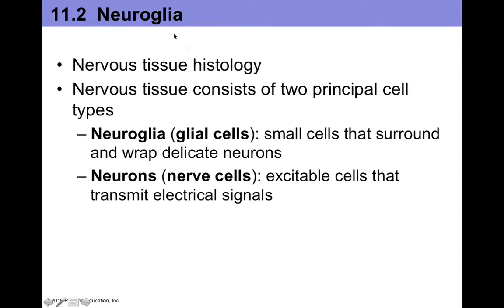In this video we're going to focus on the neuroglia. Going back to the histology chapter, we talked about how nervous tissue had two major cell types: neuroglia and neurons. The neuroglia, also called glial cells, outnumber neurons about 10 to 1. They're smaller and they surround and wrap delicate neurons, and some are involved with immune defense. In further lectures we'll cover neurons, the excitable cells that transmit electrical signals involved with high-speed communication around the body.